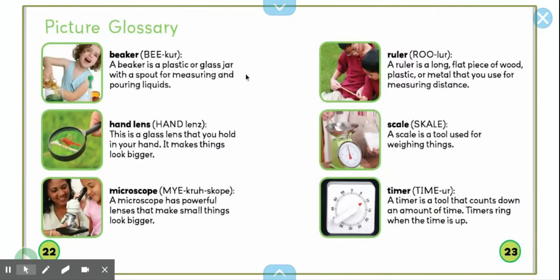And here is our picture glossary. This is a beaker. A beaker is a plastic or glass jar with a spout for measuring and pouring liquids. A hand lens, or magnifying glass, is a hand lens that you hold in your hand. It makes things look bigger.